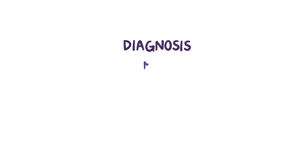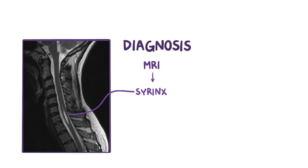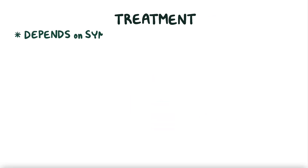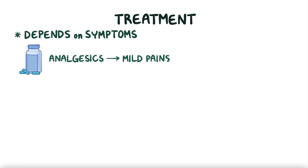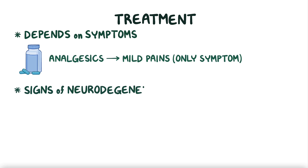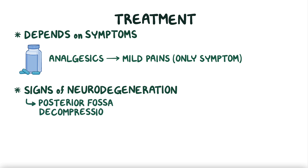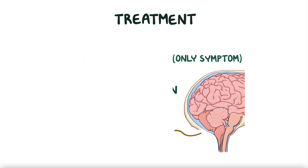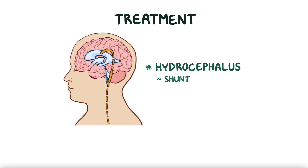Syringomyelia is typically diagnosed using an MRI, which can help visualize the syrinx as well as possible causes like Chiari malformation and spinal tumors. Treatment typically depends on the symptoms. Analgesics can be used if mild pain is the only symptom. If signs of neurodegeneration are present, a posterior fossa decompression surgery is required — a type of craniotomy where a portion of the back of the skull is removed to widen the foramen magnum, which helps release the buildup of pressure. If hydrocephalus is present, a shunt to drain the excess fluid within the brain might also be required. Catheters may also be used to drain the syrinx directly.